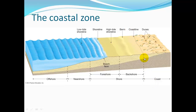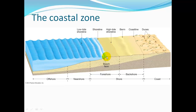Here is the coastal zone diagram. The backshore runs from the high tide line up to the coastline. Here we have a rise of sand called the berm. The foreshore is from the high tide line to the low tide line, and the shoreline is halfway between high tide and low tide. Here we'll have a dipping beach face with a slight slope. The nearshore is just below the low tide zone, and offshore is further out.